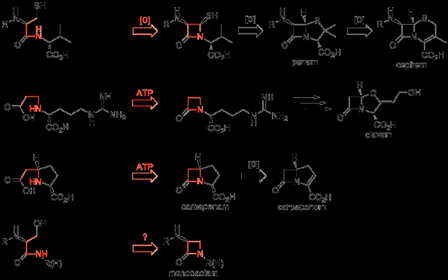Beta-lactams are classified according to their core ring structures. Beta-lactams fused to saturated 5-membered rings: Beta-lactams containing thiazolidine rings are named penems; Beta-lactams containing pyrrolidine rings are named carbapenems; Beta-lactams fused to oxazolidine rings are named oxapenems or clavams.